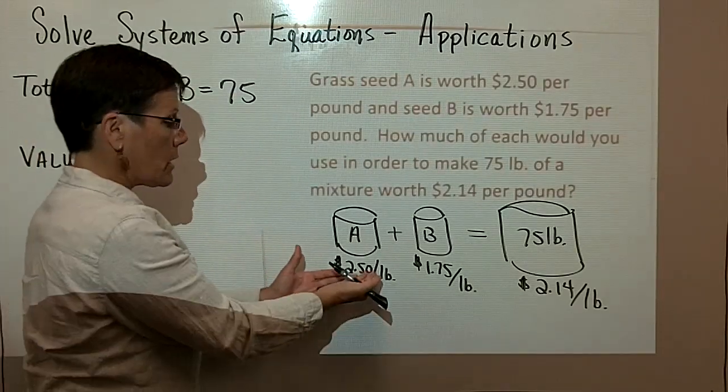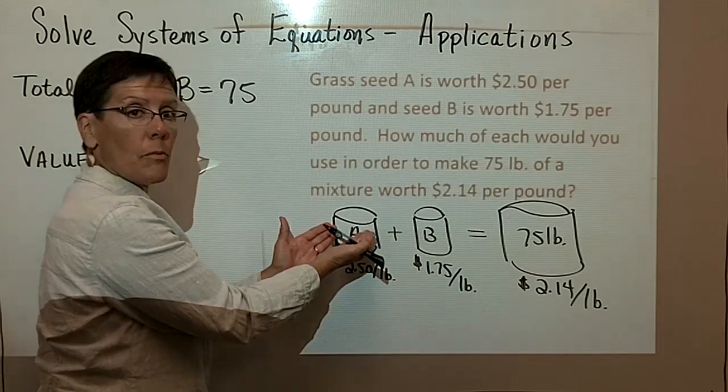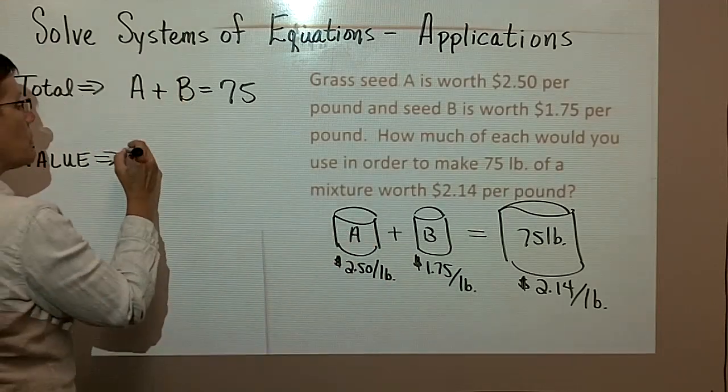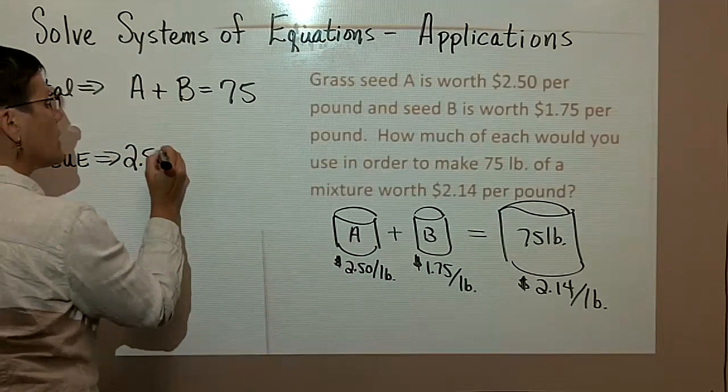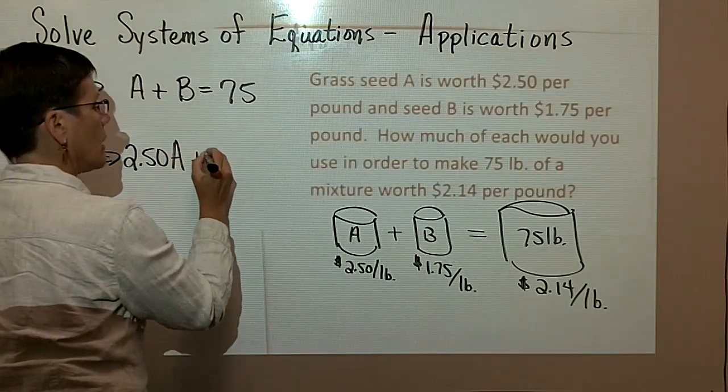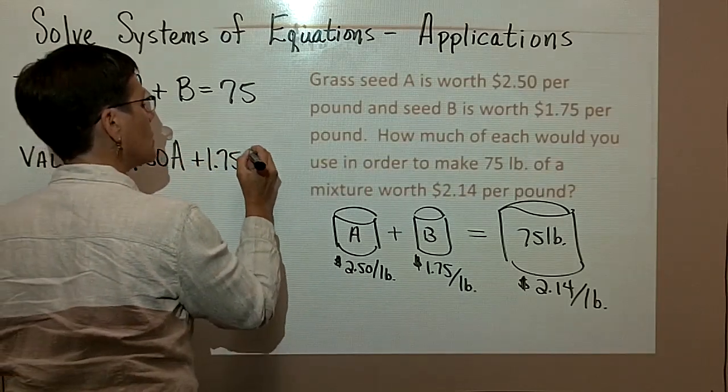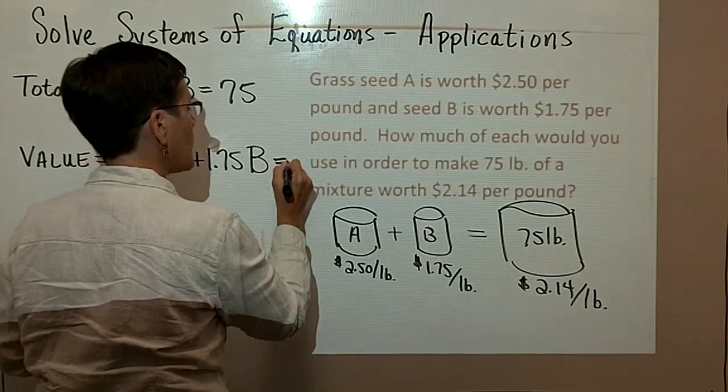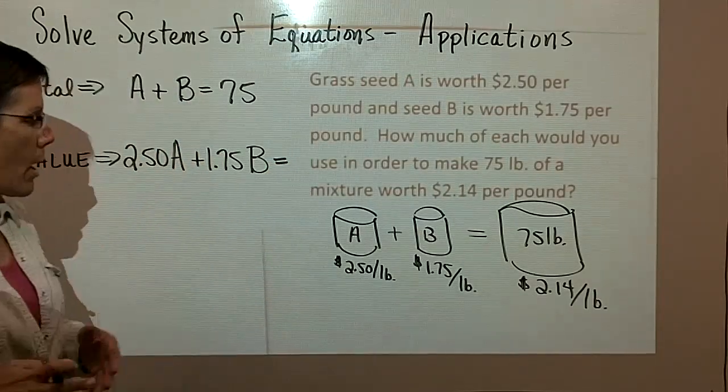The value statement is truly going to be the cost per pound times the number of pounds. So $2.50 per pound times A pounds, and then $1.75 per pound times B pounds.